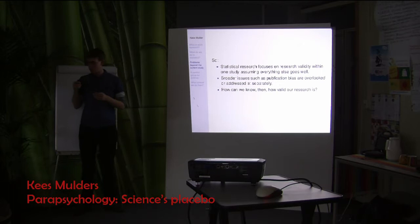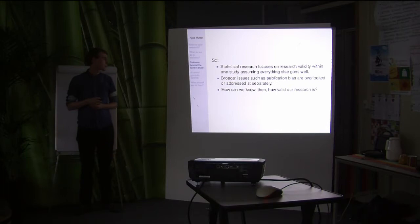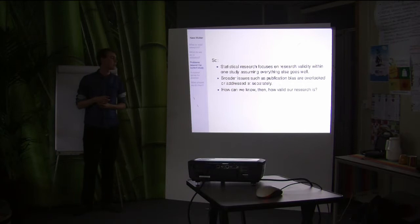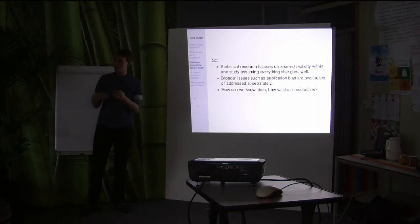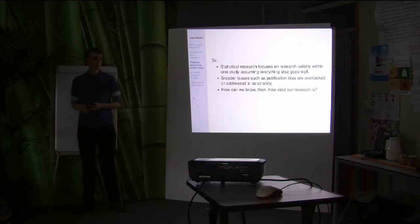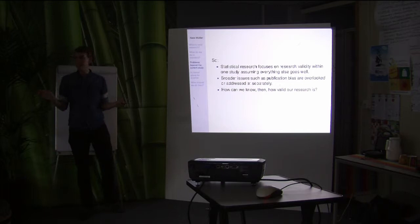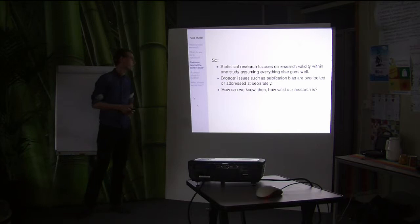These broader issues are generally either overlooked or discussed — publication bias is well known and there are many initiatives trying to address it, which are all perfectly valid. But we actually need some kind of feedback mechanism that shows us how valid our research is not within one study, but more broadly. How valid is our research discipline overall? That's actually a very difficult question.